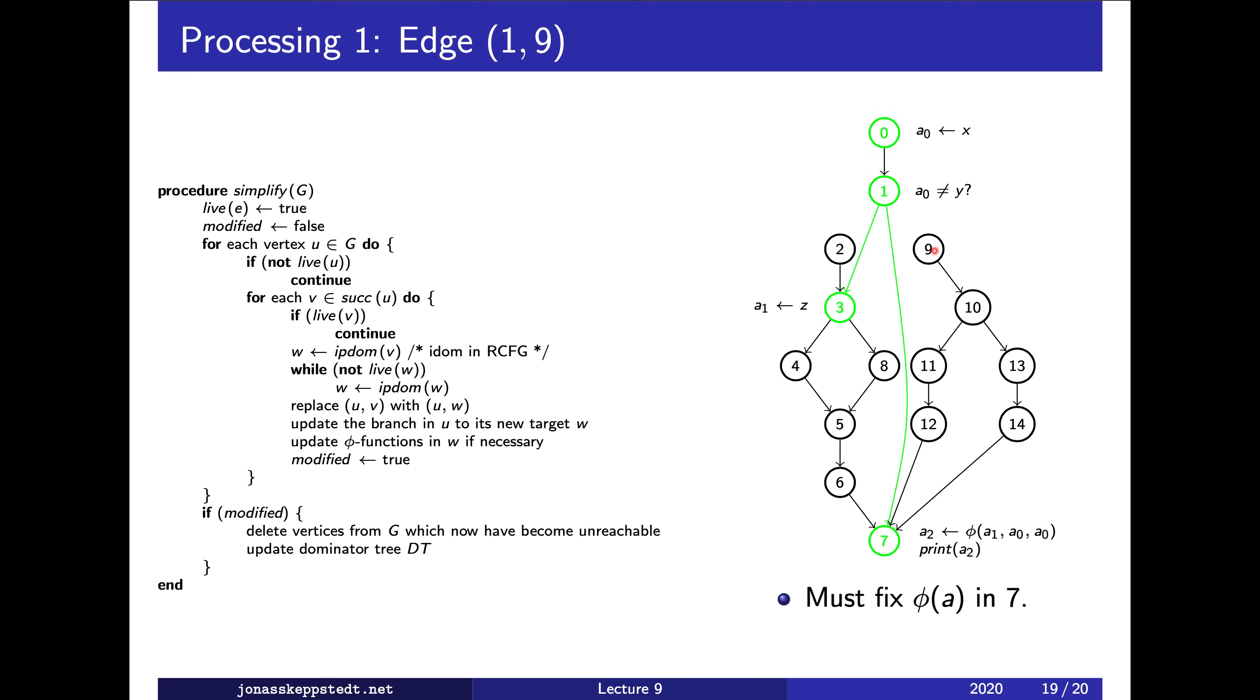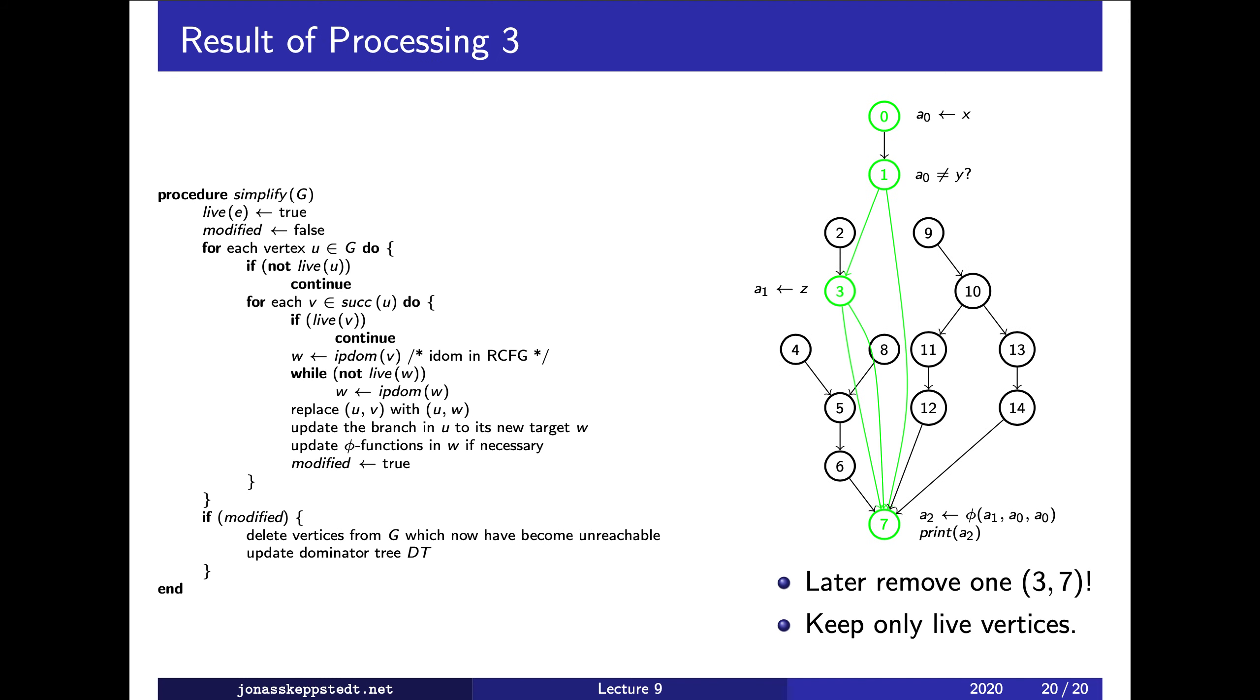Then we come to edge one to nine. Since nine is dead, we follow parents in the post-dominator tree and get to seven, since that's the first live one. Then we fix the phi function in seven. When we come to three, we also get directly to seven, and then we can remove the dead vertices and have a faster program.